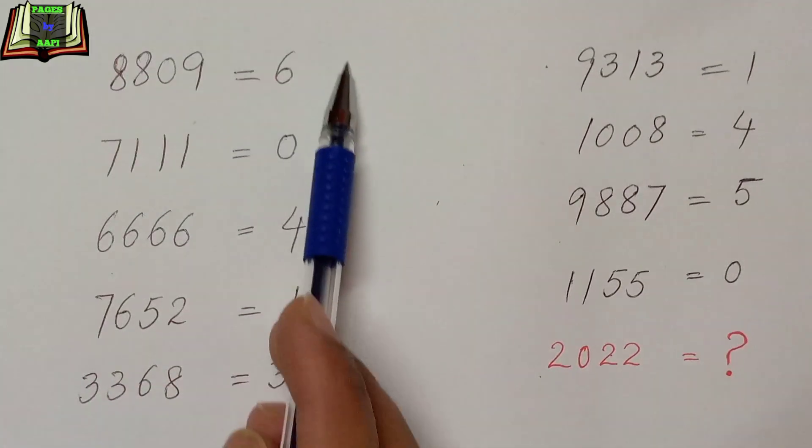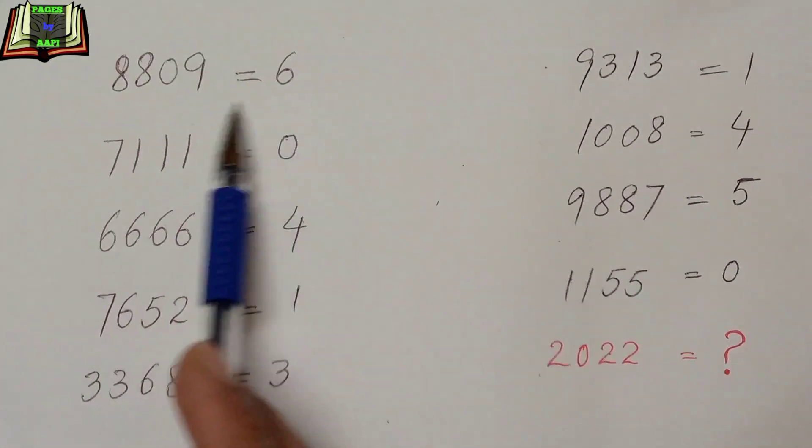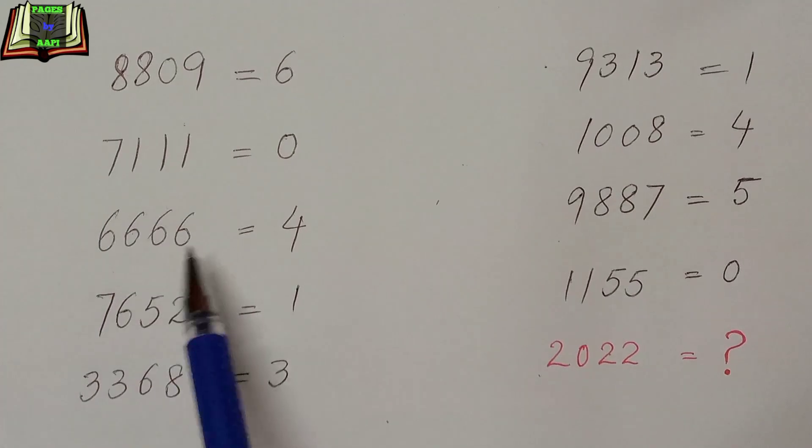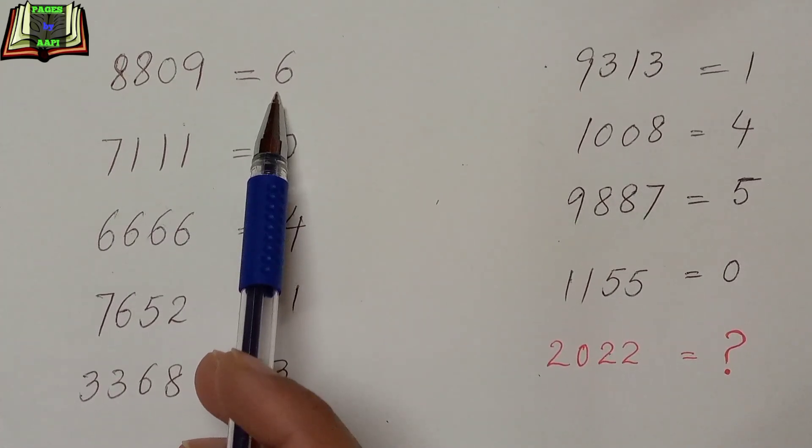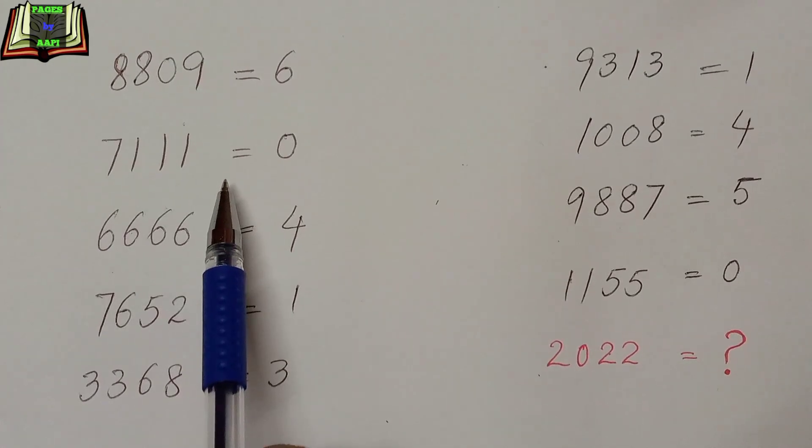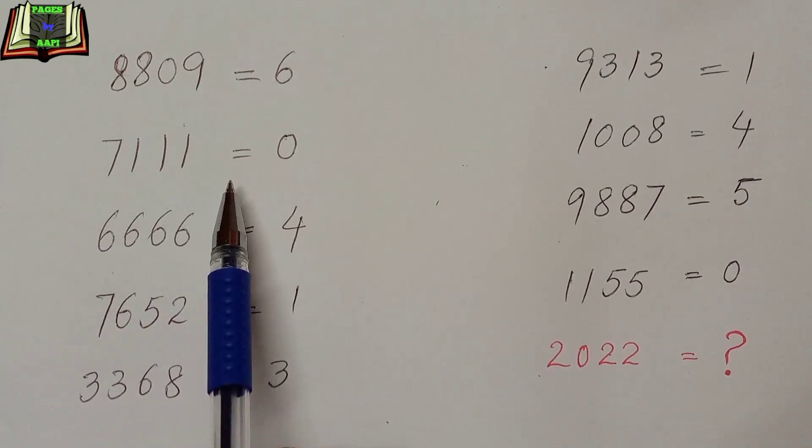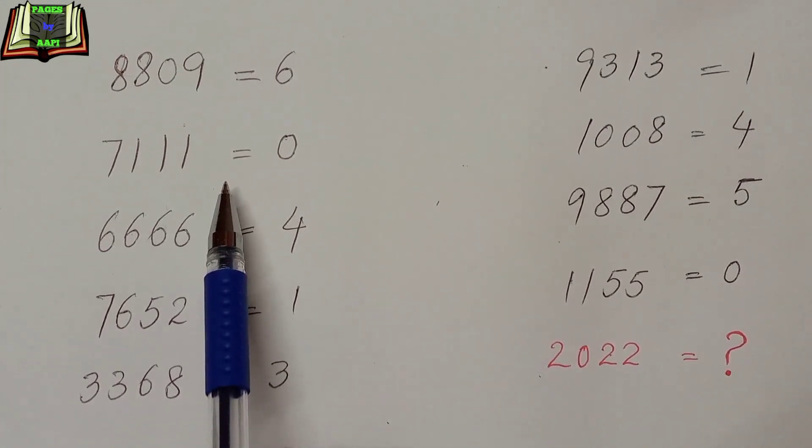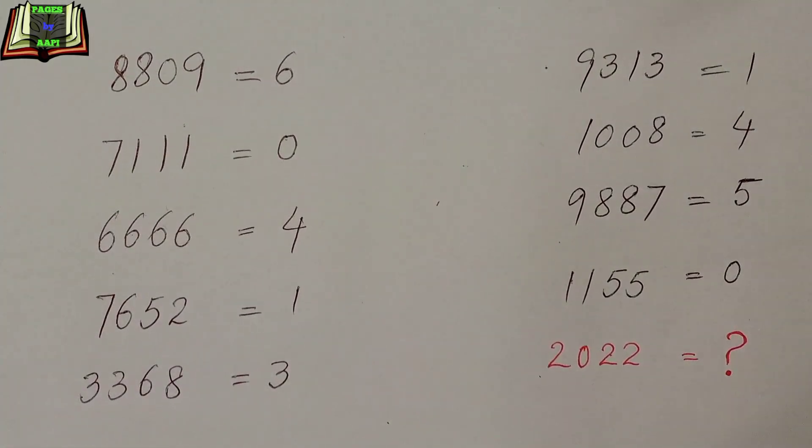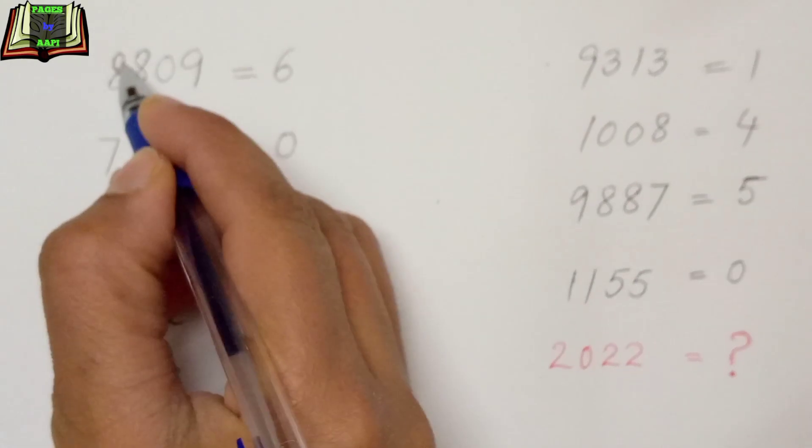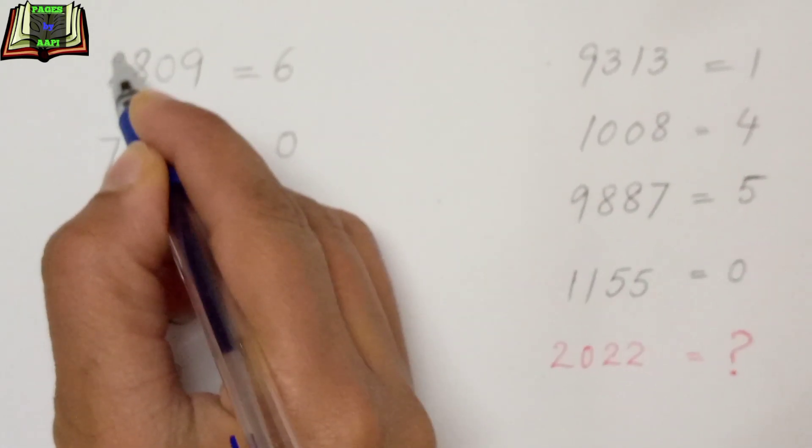So let's move on to the solution and find out the answer. In the first number, 8809 equals 6. Mathematically we know that 8809 is not equal to 6, but the numbers in this puzzle are uniquely arranged in a different pattern. And that pattern is we have to count the circles.